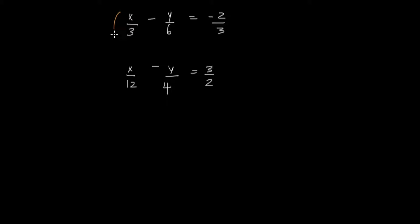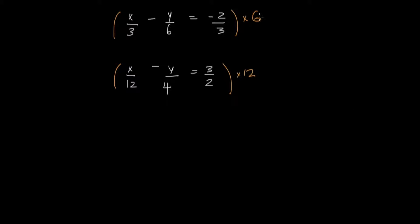To do that, we have to multiply them by their least common multiple. The least common multiple of 3 and 6 is 6, and the least common multiple of 12, 4, and 2 is 12. If you don't know how to find the LCM, you can pause this video, watch another video about that, and come back. Once we find the LCM, I'm going to multiply each term by 6 here. So that will give me 6x over 3 minus 6y over 6 equals negative 12 over 3.